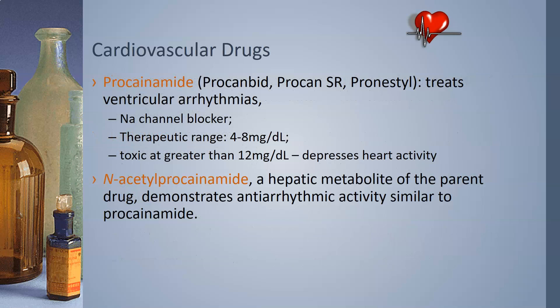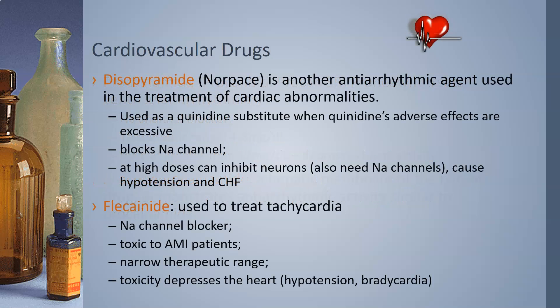Procainamide, also known as Procan, Procan Bid, Procan SR, or Pronestyl, treats ventricular arrhythmias. It is a sodium channel blocker. The therapeutic range is 4 to 8 milligrams per deciliter and it is toxic at greater than 12 milligrams per deciliter, which will depress heart activity. N-acetyl-procainamide, or NAPA, is a hepatic metabolite of procainamide that also demonstrates antiarrhythmic activity similar to the parent drug, so they are often ordered together.